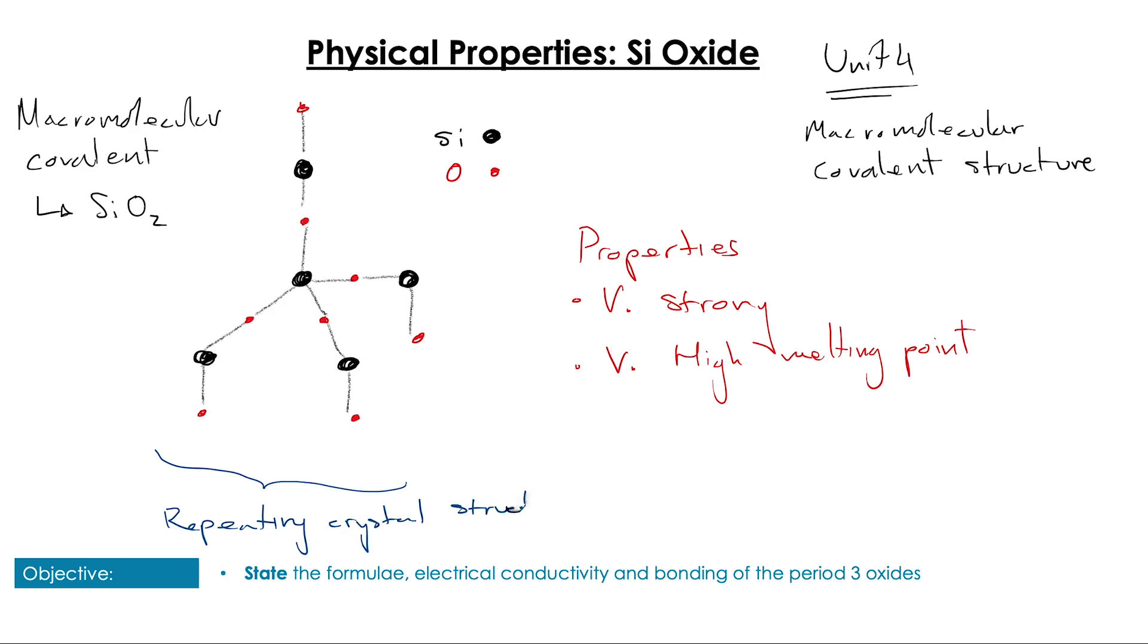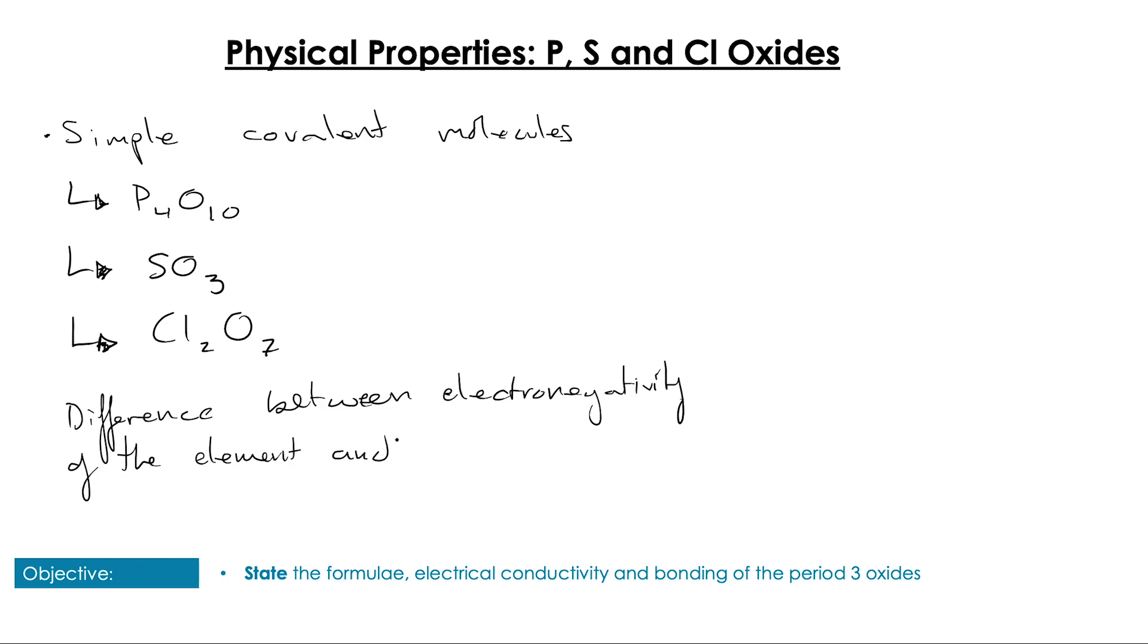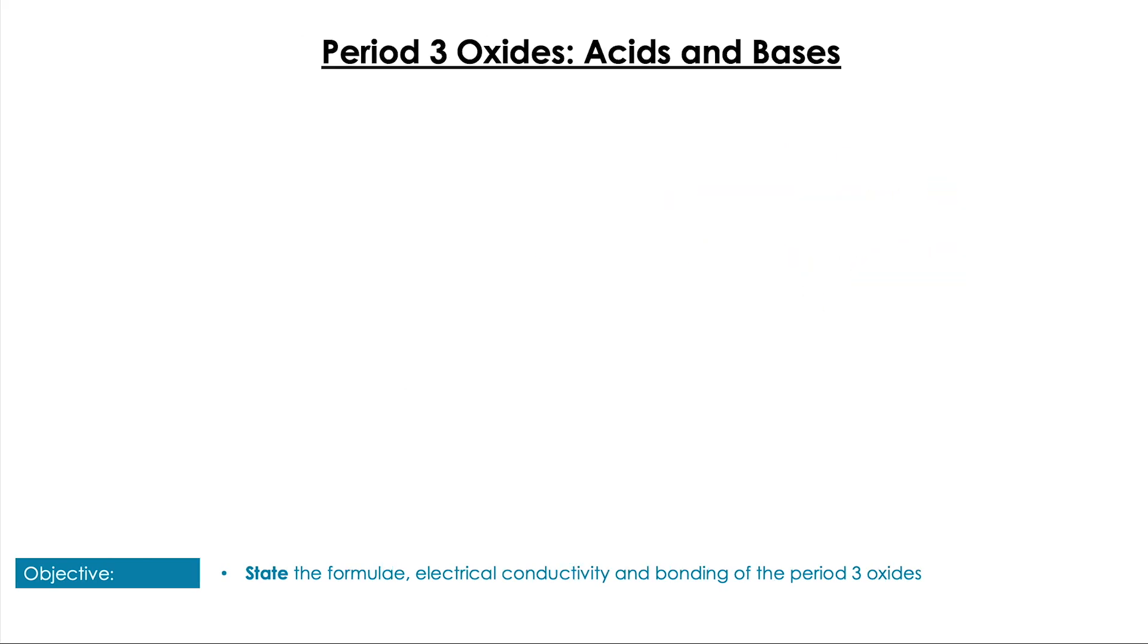When we move over to the right-hand side of the periodic table, we see that phosphorus, sulfur, and chlorine oxides all form simple covalent molecules. The reason we know that is because there's not a very large difference in electronegativity between oxygen and these elements, so these form small molecules and it's the intermolecular forces that control their properties. These have low melting and boiling points.